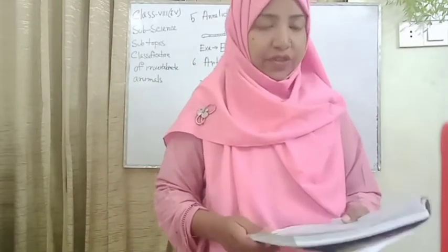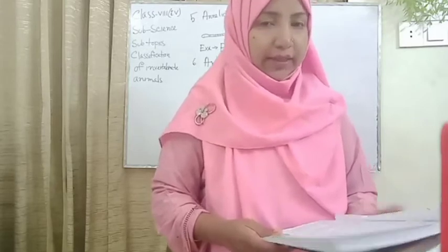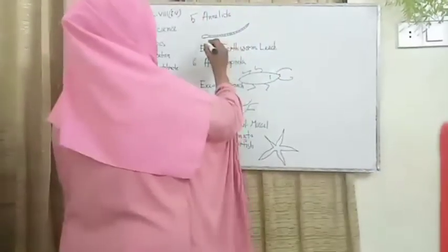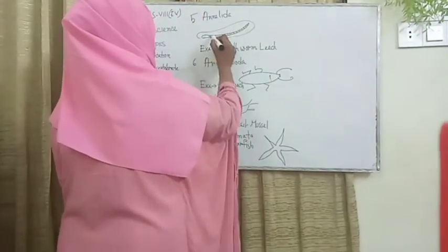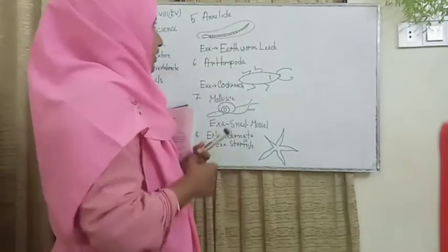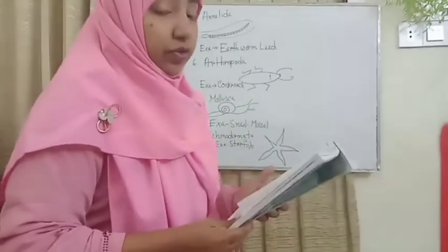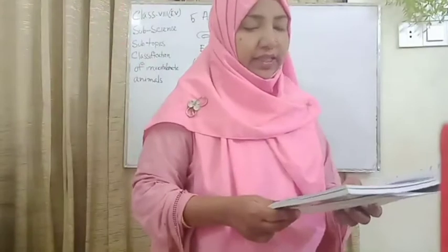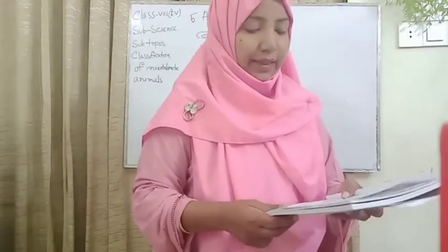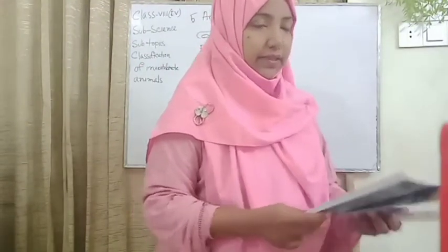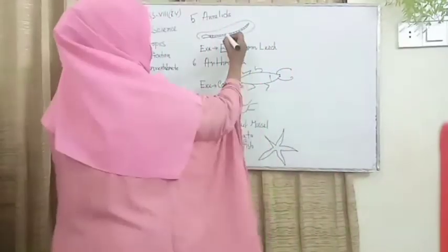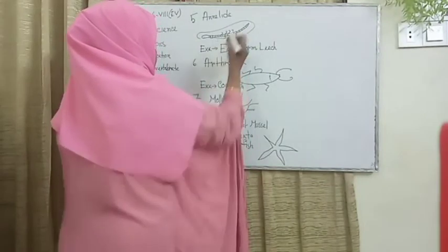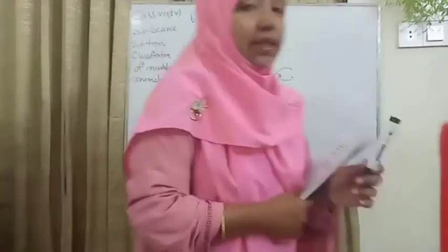Now general characteristics. The body is tubular and segmented. This structure is tube-shaped and is also ring-shaped. Each segment contains setae that help in locomotion, with the exception of no setae in the head region.